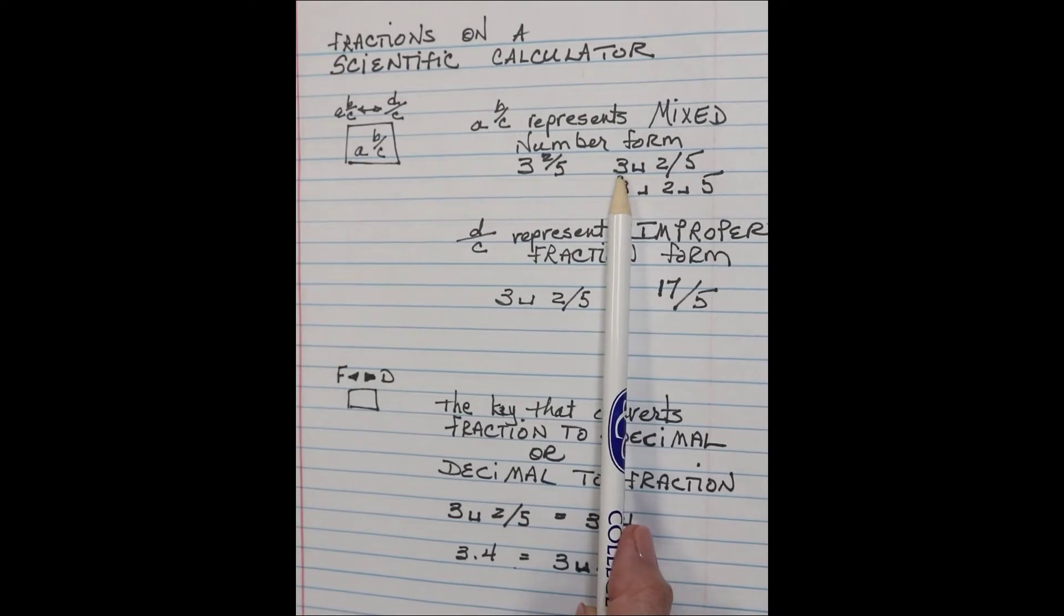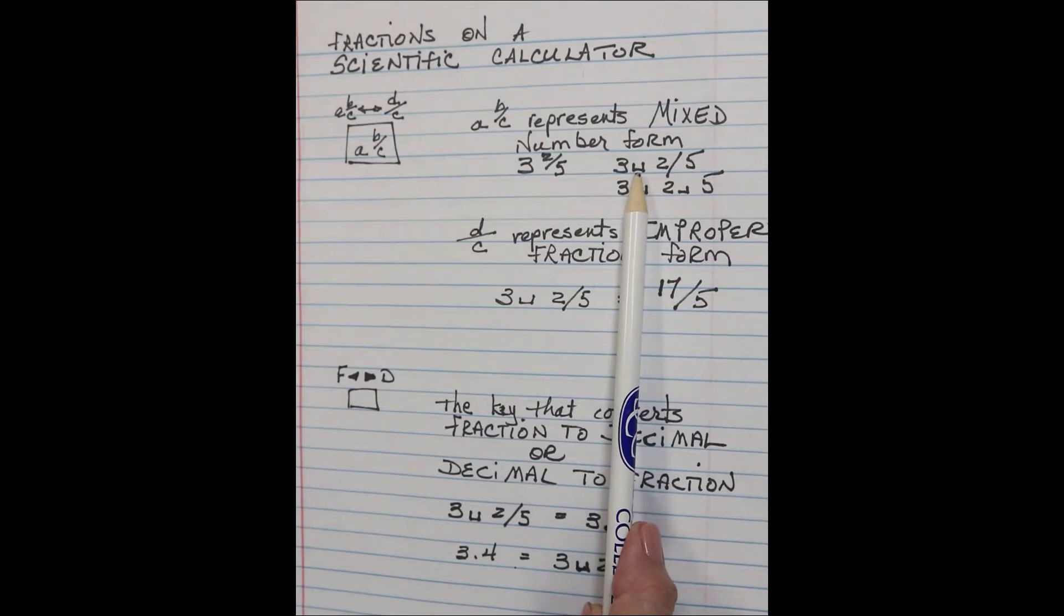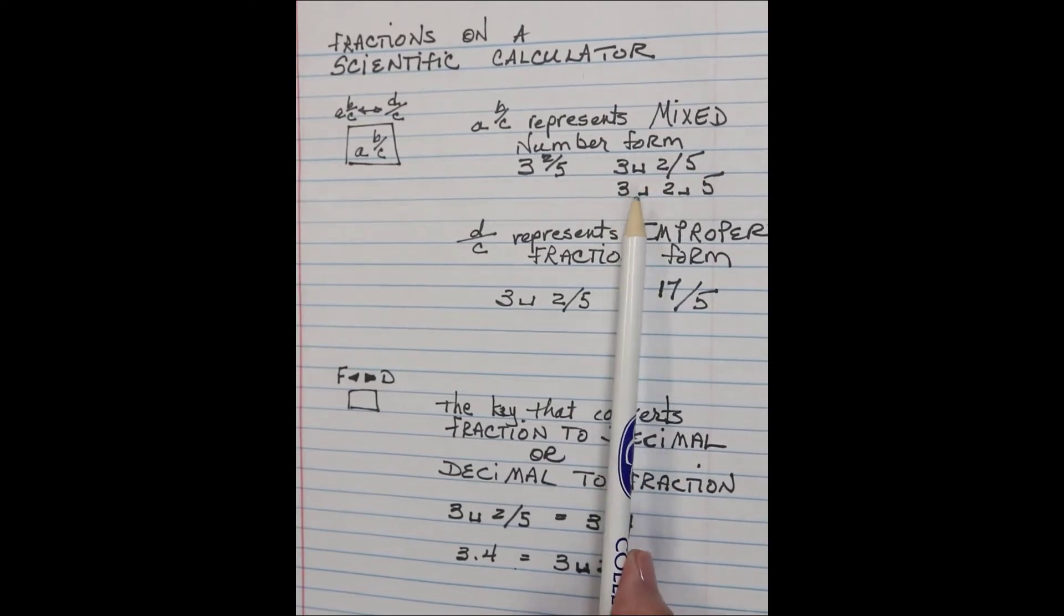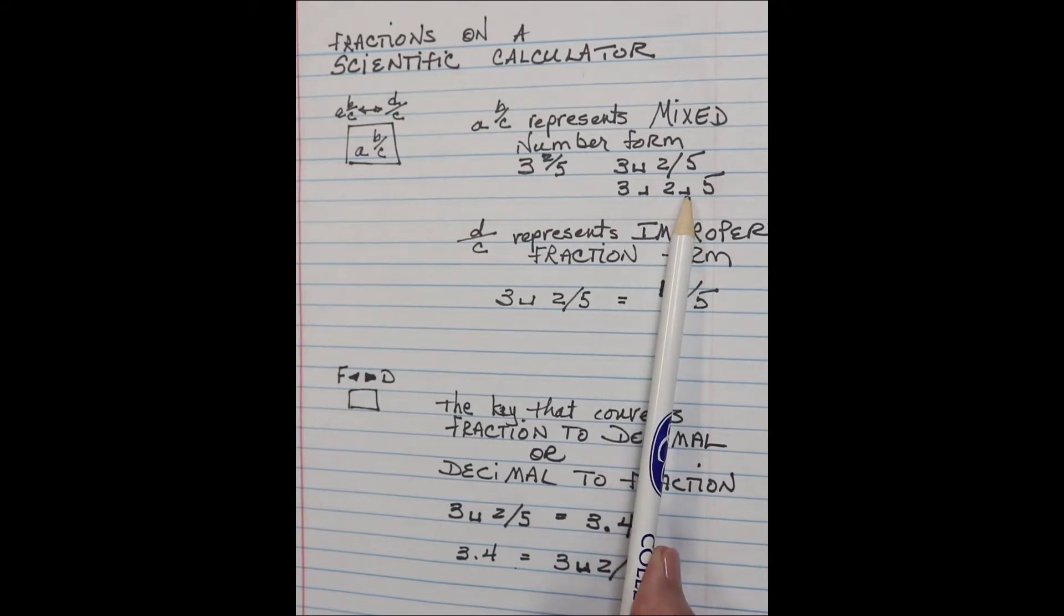It's going to be 3 with something that looks like a U and then 2 slash 5, or it may be a 3 and sort of a backwards L, then a 2 and another backwards L and a 5.